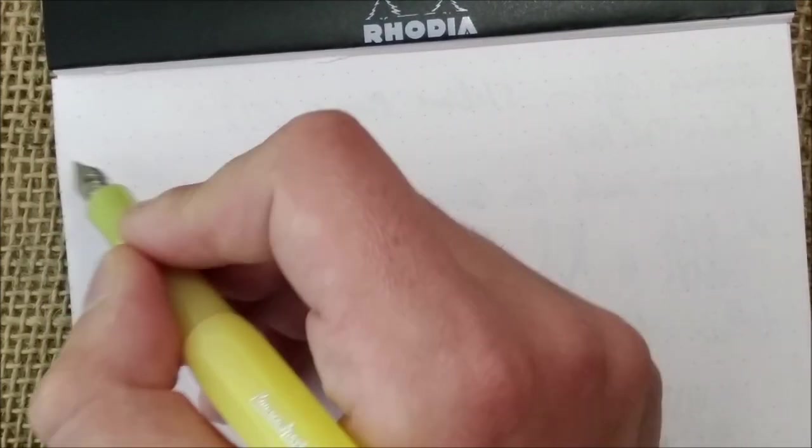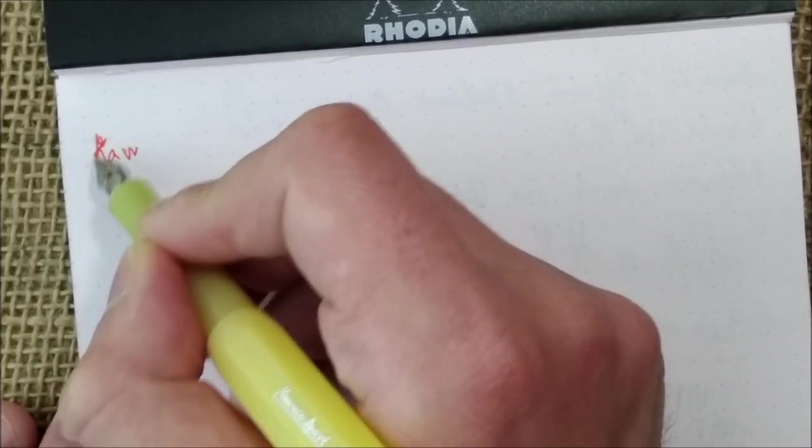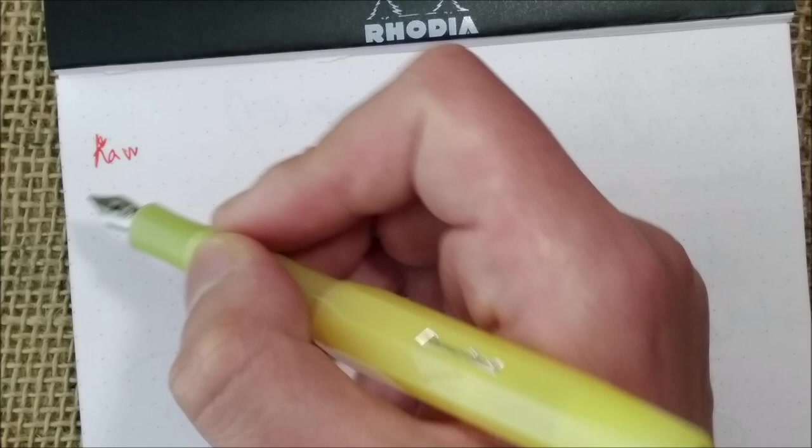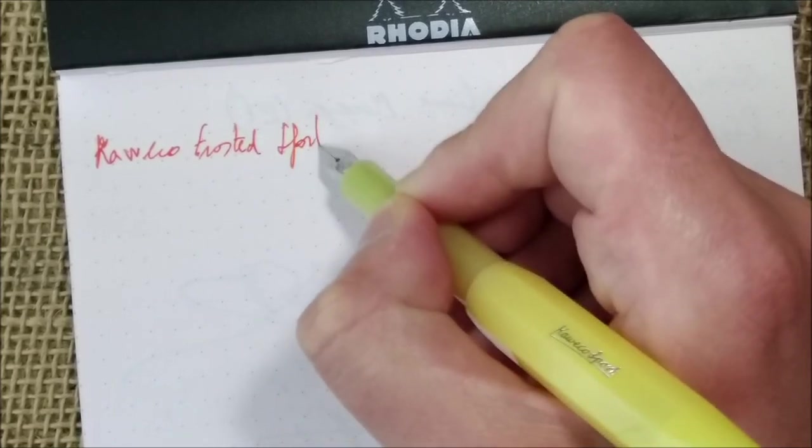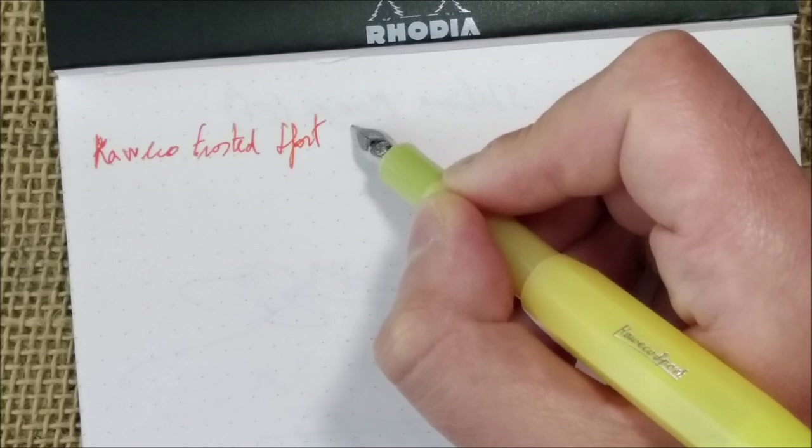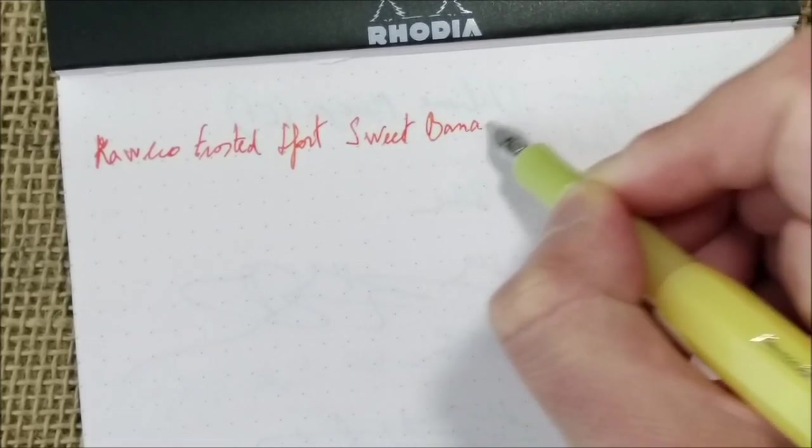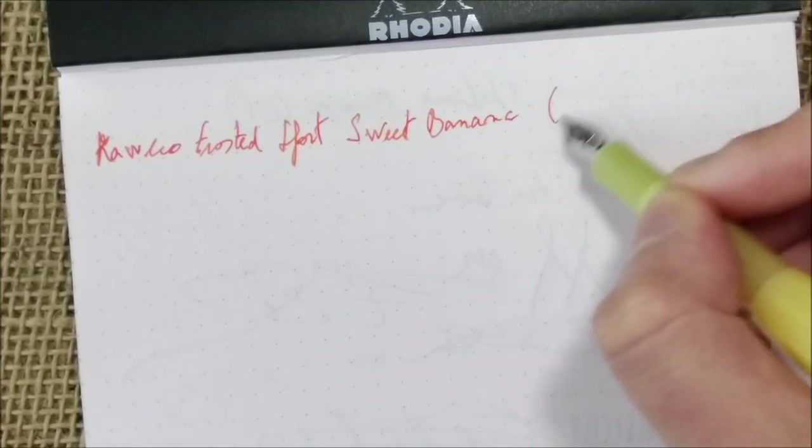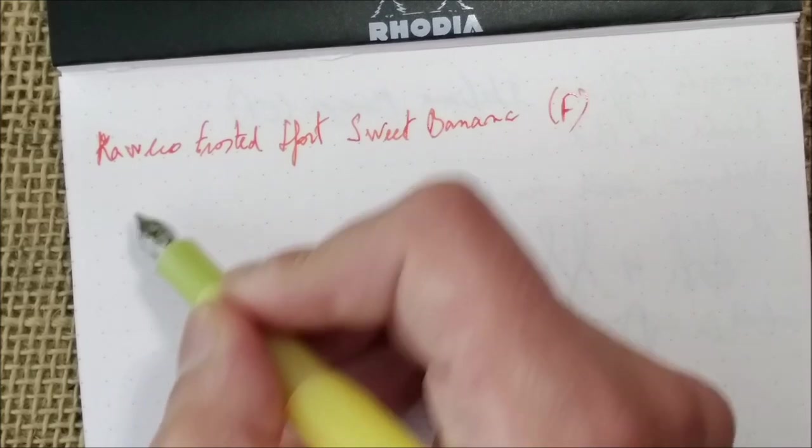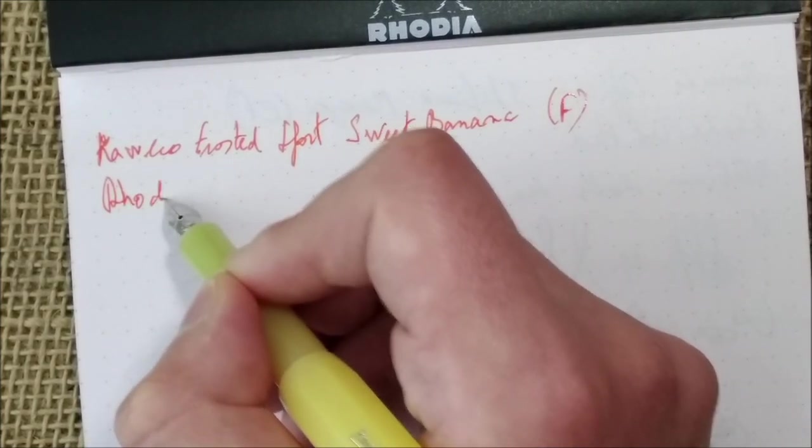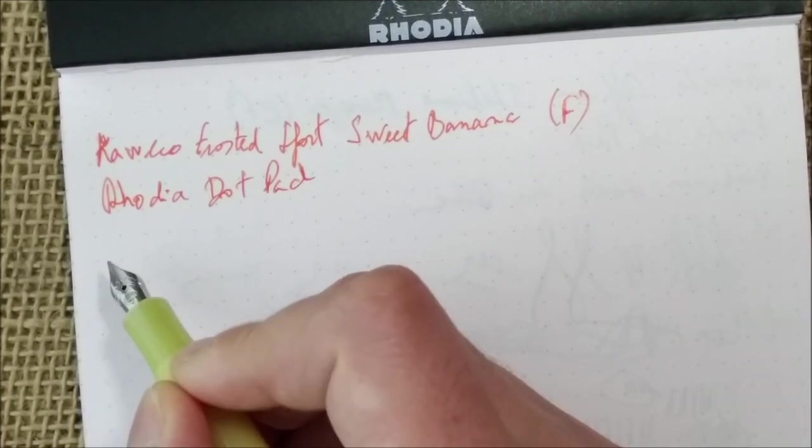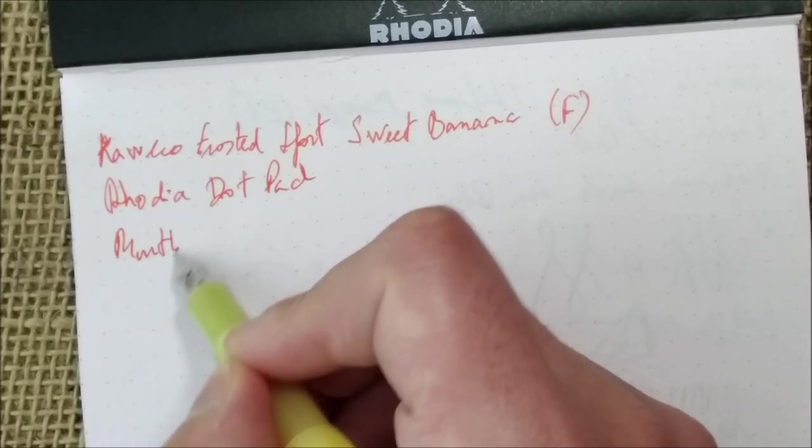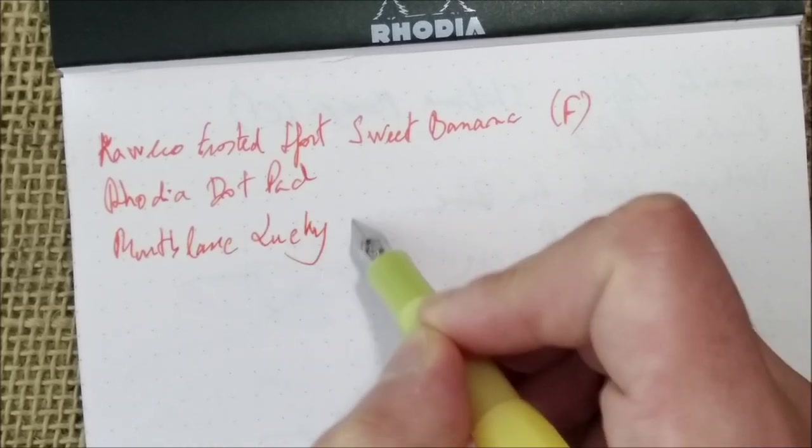And here we have our pen and paper and let's start. It hard started a little because it was uncapped for some time. This is the Kaweco Frosted Sport and the color is sweet banana, an interesting name for a pen. And the nib is a fine steel nib. The paper we are using is the usual Rhodia dot pad and the ink I have inside is the Montblanc Lucky Orange.